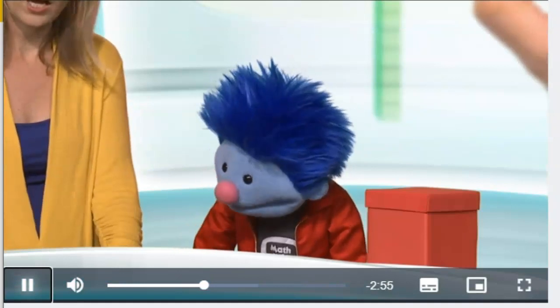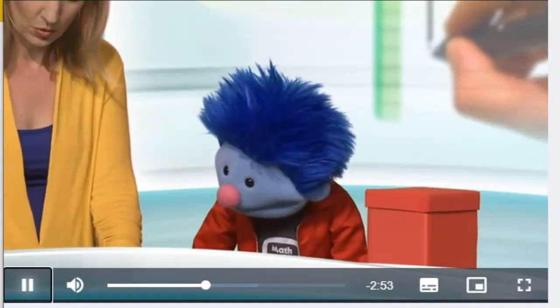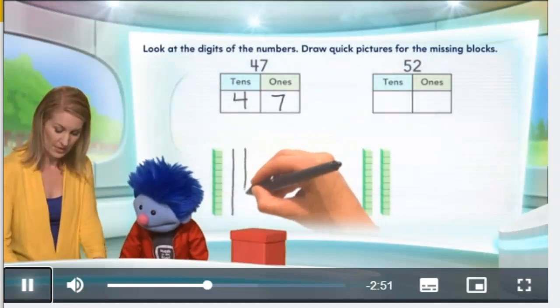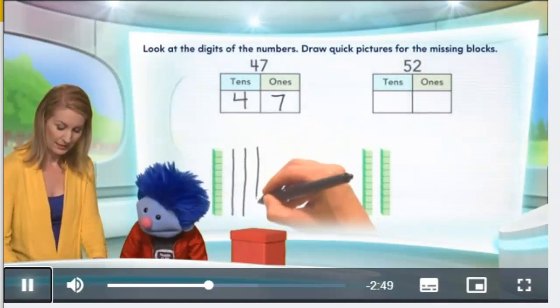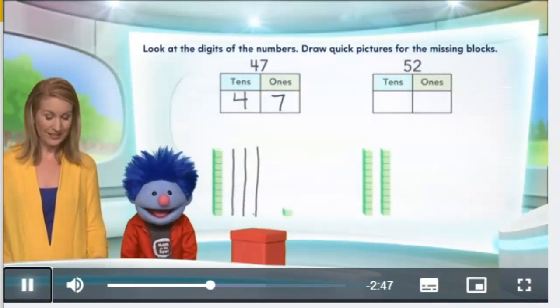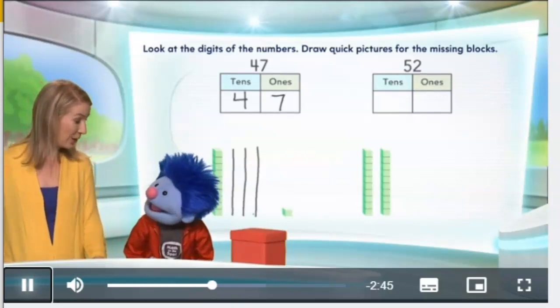So how many are we missing? We have one. So you need two. Two. Three. Three. And four. That's right. Now we have four tens. Very good.